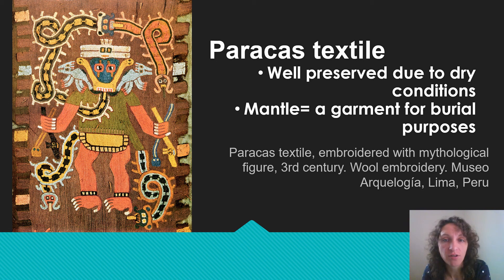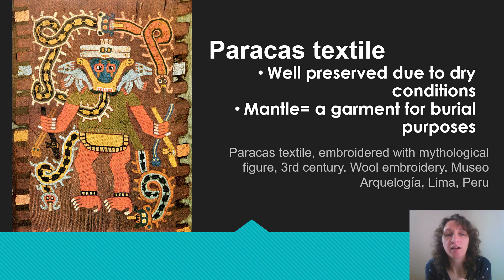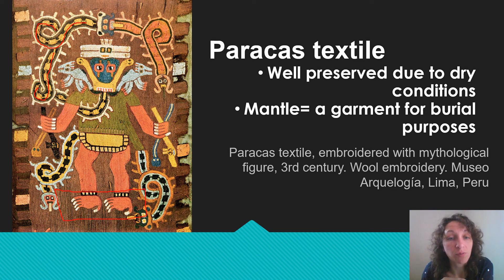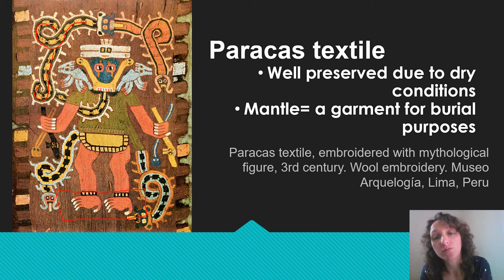Next we'll talk about the Paracas textiles, which are very well preserved due to the dry conditions surrounding the Andes Mountains. These are mantles — garments for burial purposes — with elaborate mythological figures on them. We see overlapping as snake or eel-like creatures wrap around and over each other, biting and interacting. There's also use of twisted perspective, a vocabulary word we've used before in this class. These are mythological figures associated with death and the afterlife, since these garments were used for burial purposes.